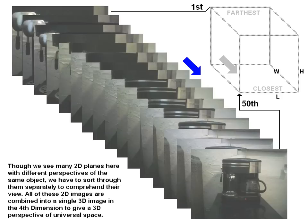Though we see many 2D planes here with different perspectives of the same object, we have to sort through them separately to comprehend their view. All of these 2D images are combined into a single 3D image in the 4th dimension to give a 3D perspective of universal space. Now we can take a look at what these 50 images of the same object look like from a 3D perspective.